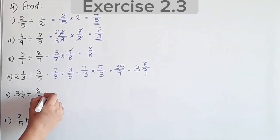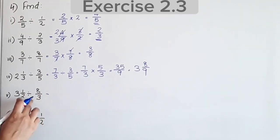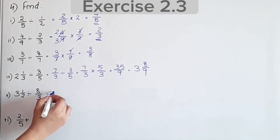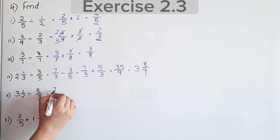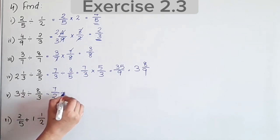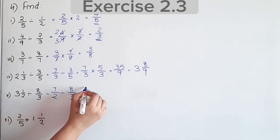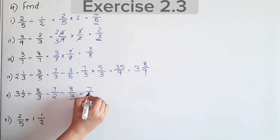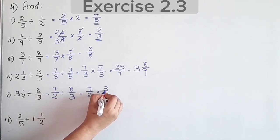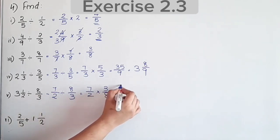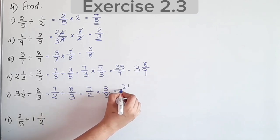Next question: 3½ divided by 8/3. Equal to 7/2 into 3/8, which equals 21 by 16.